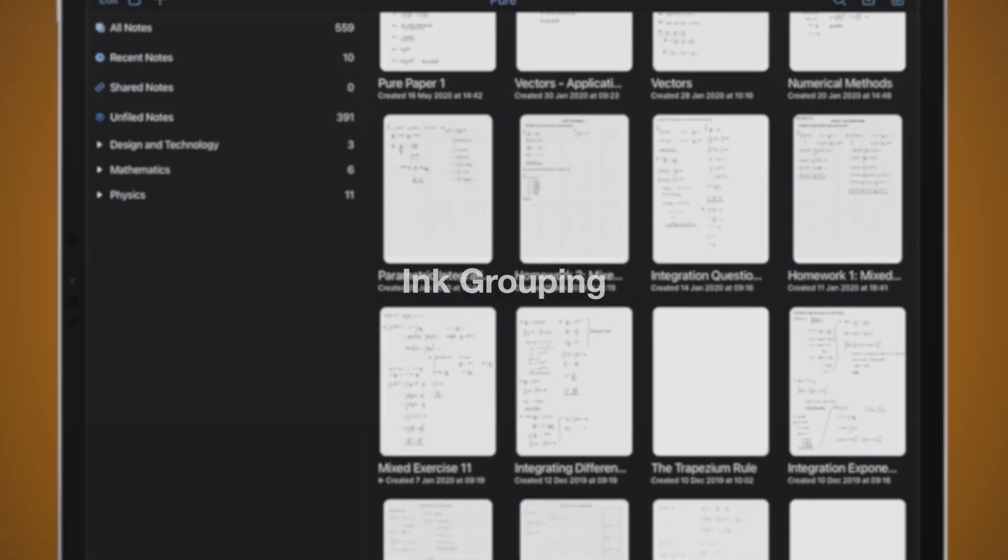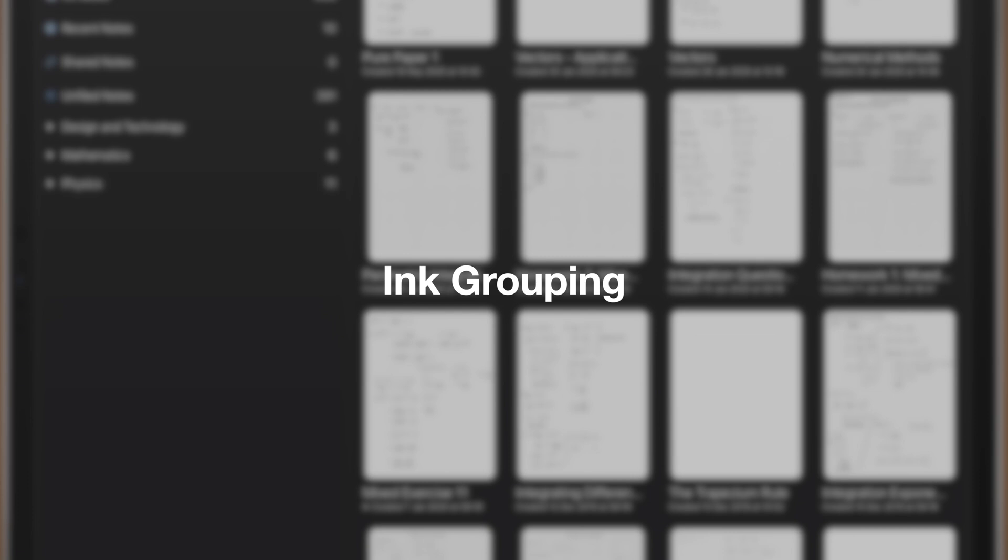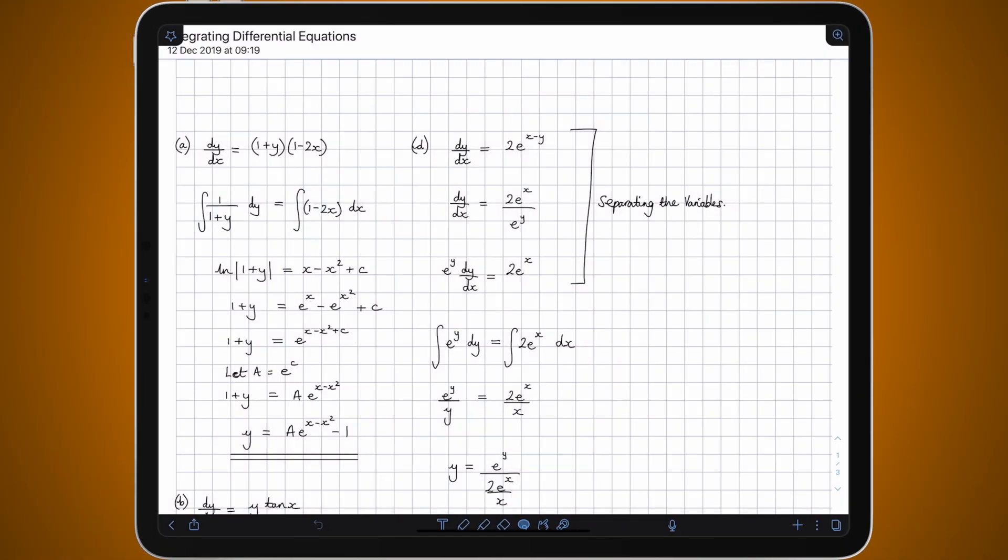Now the second major feature is ink grouping. So if I open one of these notes, what ink grouping allows you to do is basically just that. It allows you to group multiple pen strokes together into one editable object.